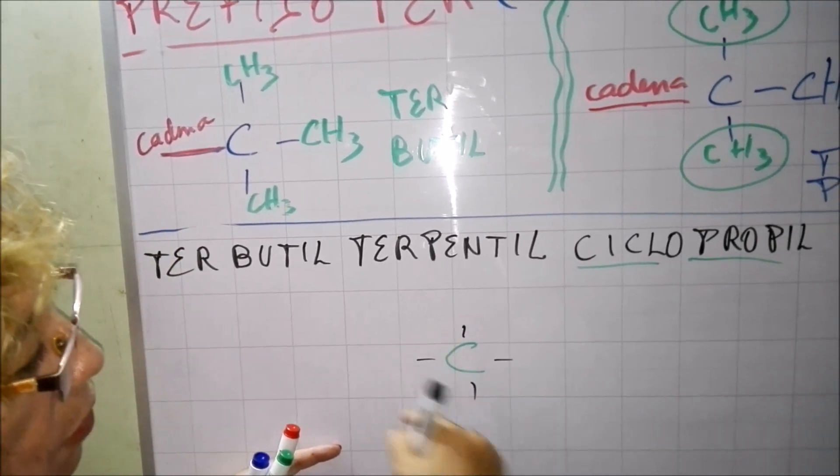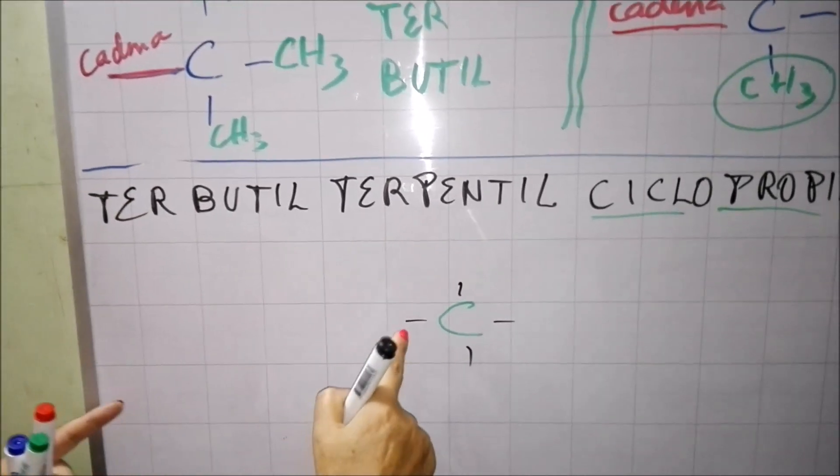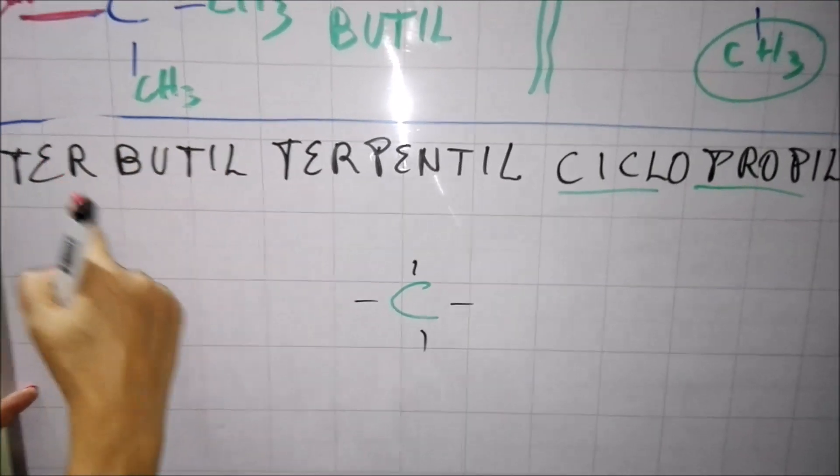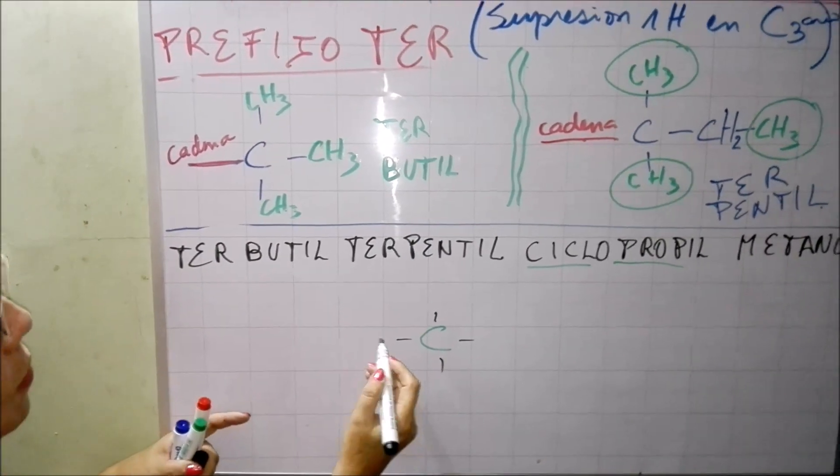En cada uno de estos supuestamente tengo que tener cuatro bracitos en mi metano. 1, 2, 3 y 4, ahí estoy en mi metano. A partir de cadena principal entonces